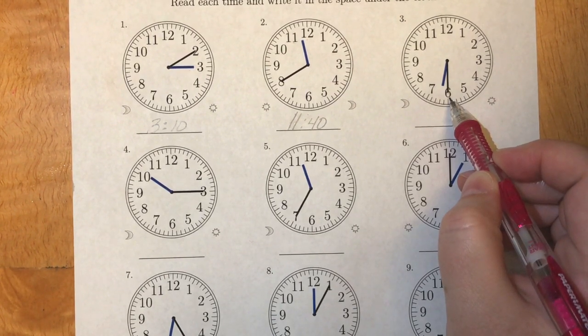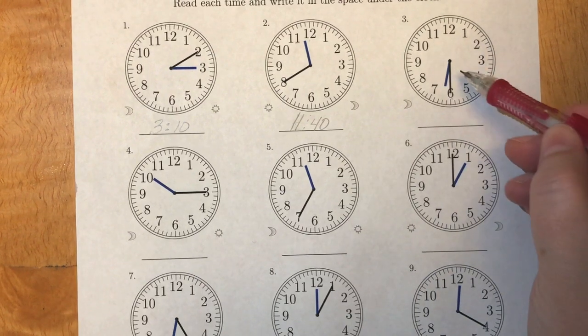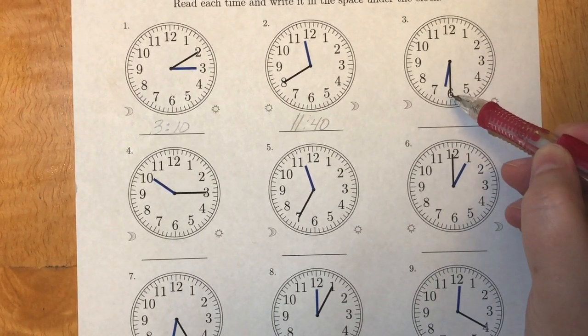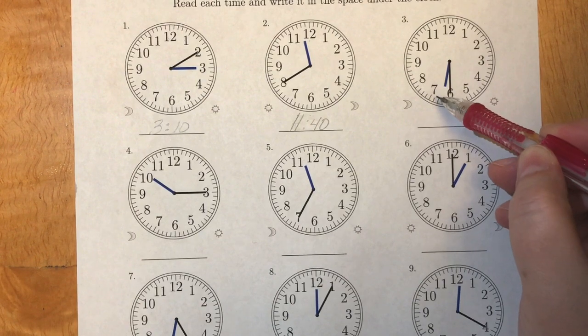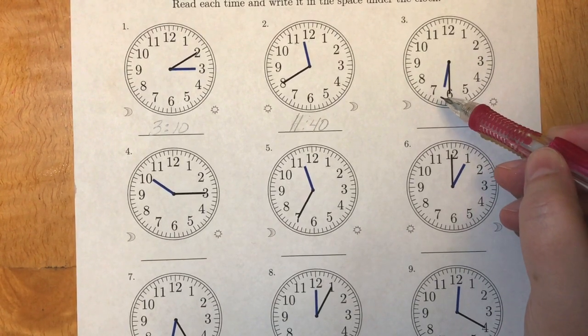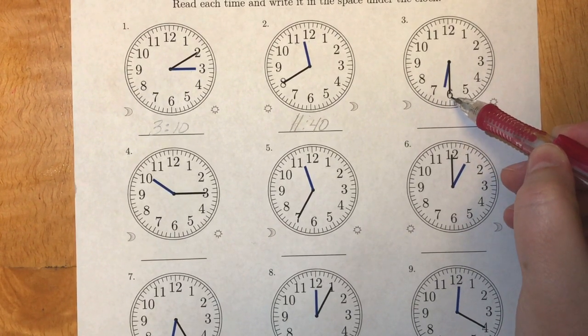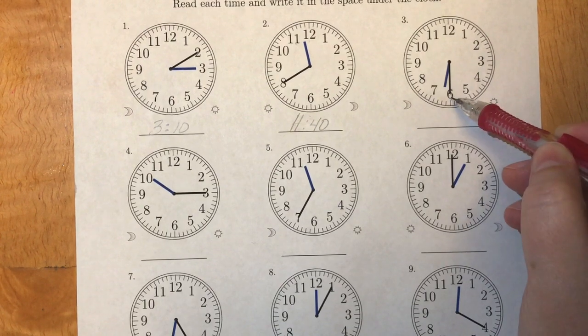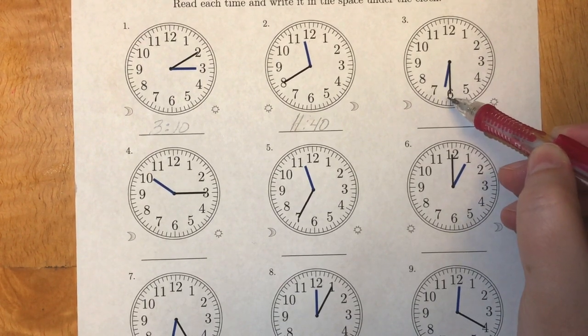What hour are we on? Again our hour hand is in between two numbers. It's not to the seven yet. So it's not seven o'clock. We're still in the six o'clock hour. So this clock is showing 6:30.